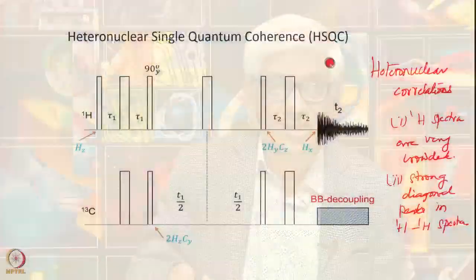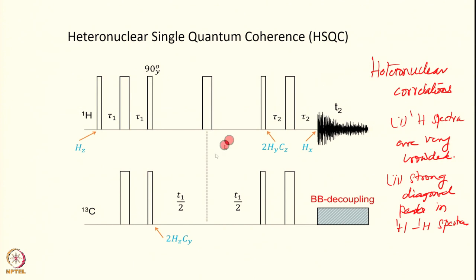We continue with the discussion of heteronuclear correlations. As mentioned, the most common experiment here is the heteronuclear single quantum coherence, which is also called HSQC. Now, how does this experiment go?